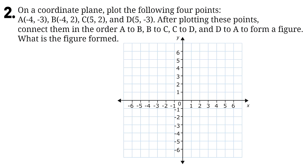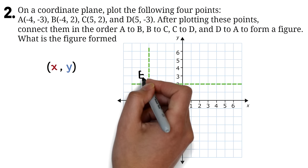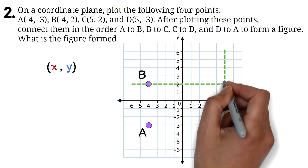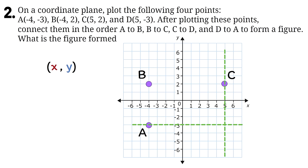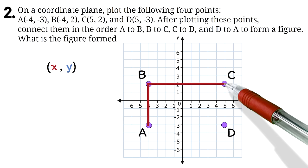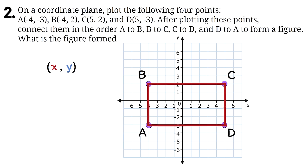To answer this question, you have to know how to plot points on the coordinate plane and identify shapes. On a point notation, the first value is your x value and the second is your y value. For A(-4, -3), x is -4 and y is -3. For B(-4, 2), x is -4 and y is 2. For C(5, 2), x is 5 and y is 2. For D(5, -3), x is 5 and y is -3. After connecting the points in order A to B, B to C, C to D, and D to A, we notice opposite sides are parallel and equal and the angles are 90 degrees, so this is a rectangle.